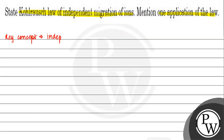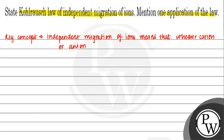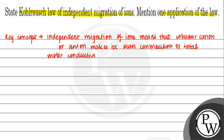Independent migration of ions means that each anion or cation makes its own contribution to the total molar conductivity of the electrolyte.